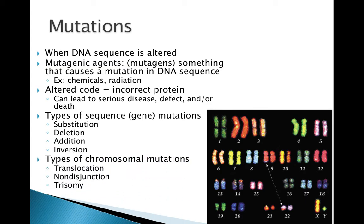The last thing I want to talk about are the types of chromosomal mutations. When you look at chromosomes in a karyotype, if there is an extra chromosome where there should only be two, or there's one missing, we call those non-disjunctions or trisomies. The other type is called a translocation, where a piece of one chromosome winds up in the place of another. We're going to look at these chromosomal mutations in the next few slides.